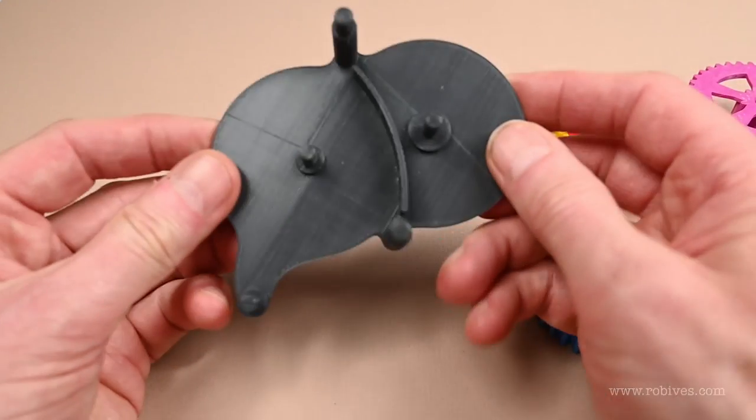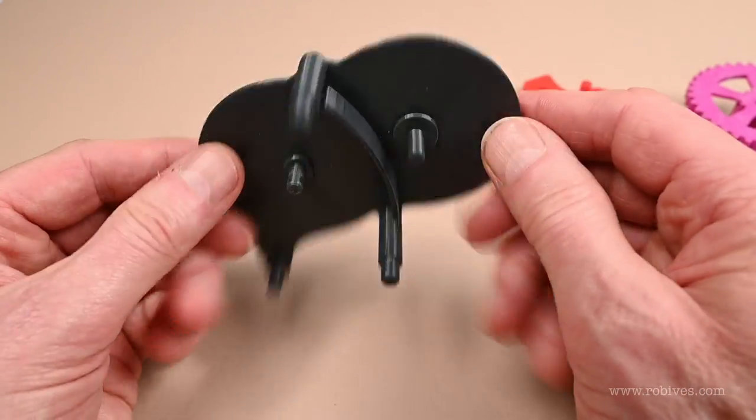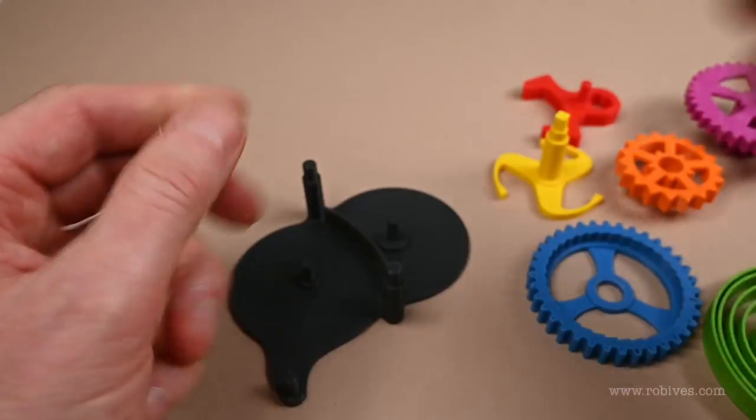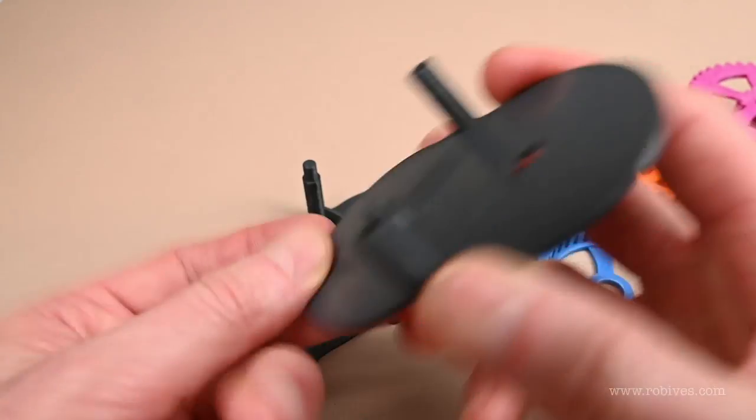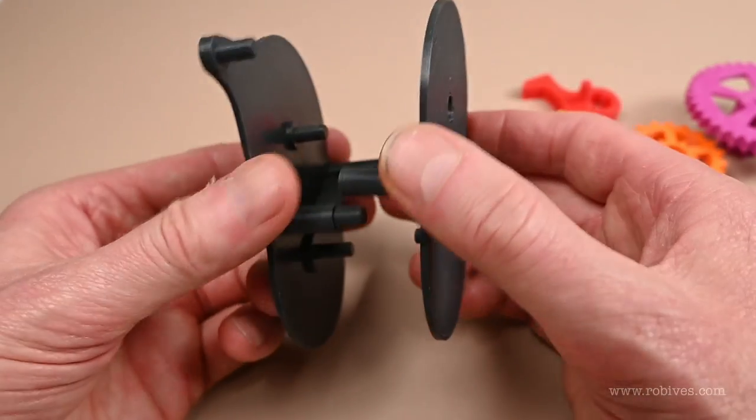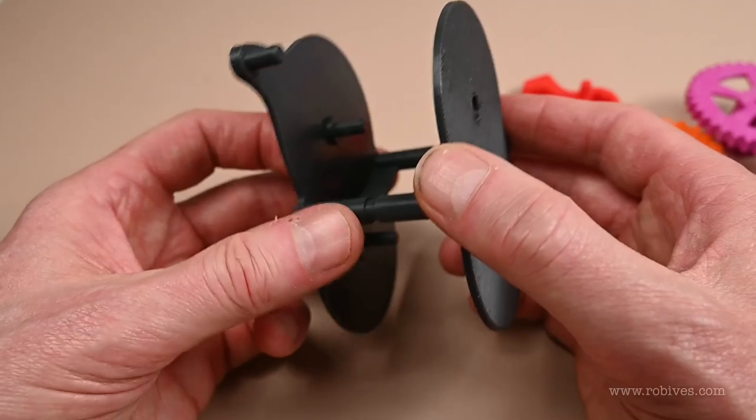So I've made a case to put all the parts of the clockwork motor in. That's the bottom, that's the top, and then they're going to slot together using those. It's just a friction fit at the moment. Those all slot together like that.